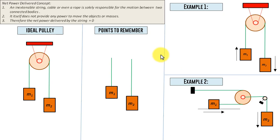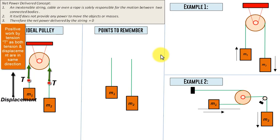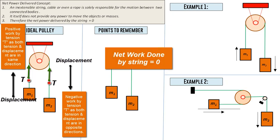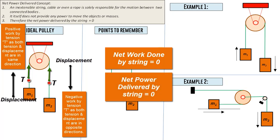We are talking about masses connected to each other via a string passing over a pulley. The string is solely responsible for the motion between connected bodies, but the string itself does not provide any work to move the objects. The string has an internal force in the form of tension T. If it does positive work on one side, it does negative work on the other side, so the net work done by the string is zero — and no work done means no power delivered.